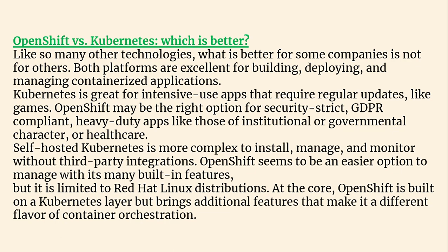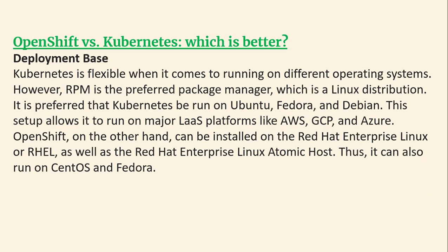At its core, OpenShift is built on a Kubernetes layer but brings additional features that make it a different flavor of container orchestration. Comparing deployment: Kubernetes is flexible when running on different operating systems — it can run on Ubuntu, Fedora, and Debian — supporting major cloud platforms like AWS, GCP, and Azure. OpenShift, on the other hand, can be installed on Red Hat Enterprise Linux (RHEL), Red Hat Enterprise Linux Atomic Host, CentOS, and Fedora.